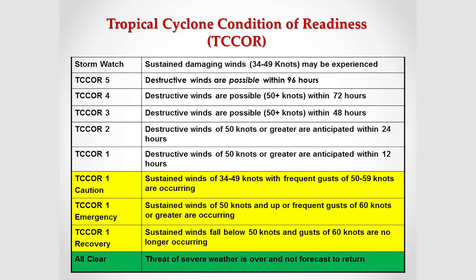For T-Core 1 Recovery, the storm has passed and sustained winds have fallen below 50 knots and are no longer expected to occur. We will send out experts to check the base for damages and any possible hazards — fallen power lines or anything that could pose a danger to the public. We will respond to those hazards and make sure the base is safe before issuing the all clear. The all clear means there's no threat of severe weather, the storm has passed, and there are no hazards on the base.